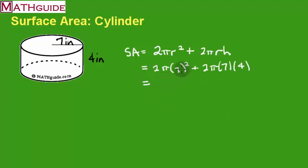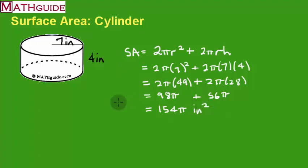Now we play cleanup. 7 squared is 49. 7 times 4 is 28. 49 times 2 is 98. 28 times 2 is 56. Now we add them together, and we get 154π. This is what our answer looks like, and we would put inches squared, because it's area. Area is always going to be in square units.